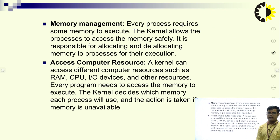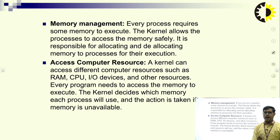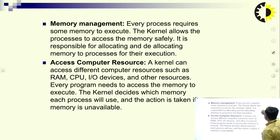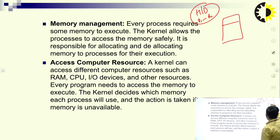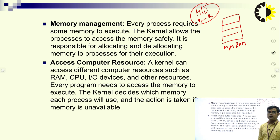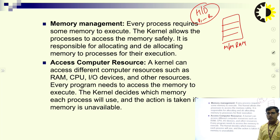Next is memory management. In a system, we have limited memory space — if talking about RAM, the RAM space is limited. Every process requires some memory to execute. Suppose all processes reside on the hard disk and are ready to execute on the CPU. It is not possible for the operating system to load everything because we have short memory called RAM. The kernel manages memory management. The kernel allows processes to access memory safely and is responsible for allocating and deallocating memory to processes for their execution.